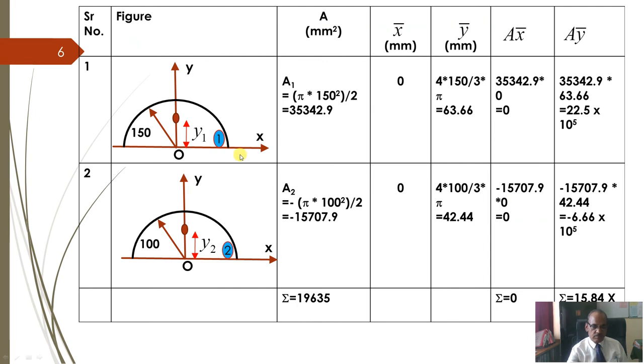So, let us take first part, upper circle 150. So, what is area? Pi r square by 2. Now, this is the, you see, coordinate system is passing through centroid and it is symmetrical about y-axis and that is why when figure is symmetrical about y-axis, x-coordinate is 0. And y-coordinate is, you know, 4r by 3pi, 4r by 3pi, that you can calculate. You take a1 x1, this will be 0, then a1 y1 will be this much. And then, this area only will have to deduct for second circle, having radius 100.